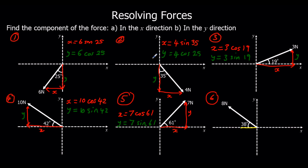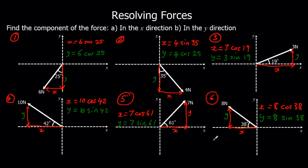And finally, question 6: we've got x as the adjacent, so x equals 8 cos 38. Y is the opposite, so y equals 8 sin 38. X is negative this time, so it's backwards along the x-axis, and y is positive because it's in the positive y-direction.